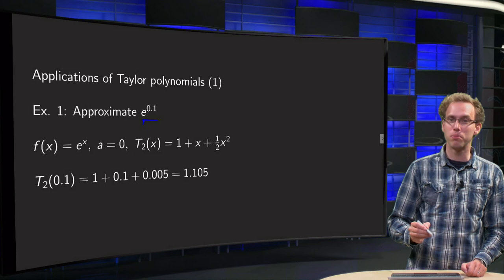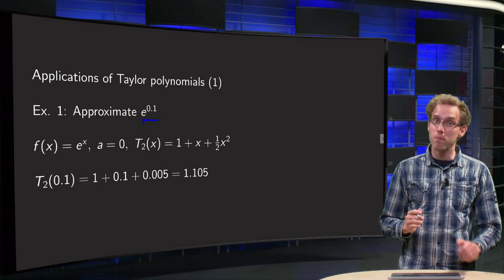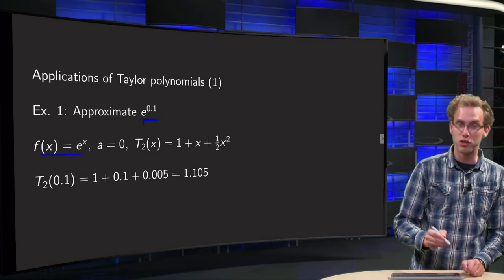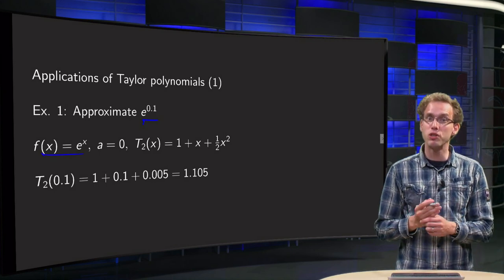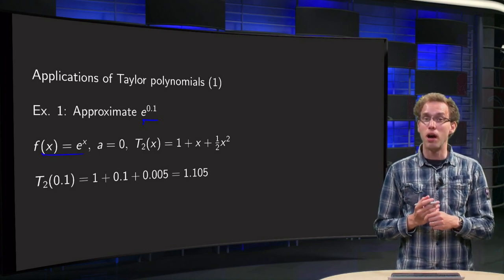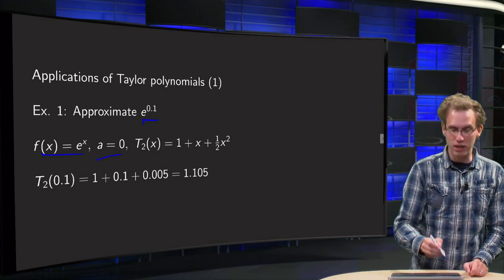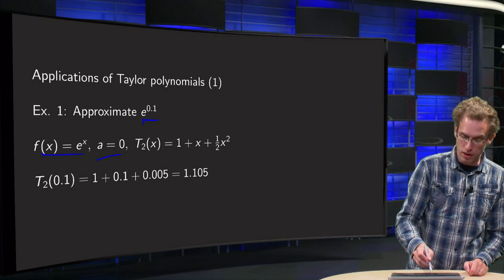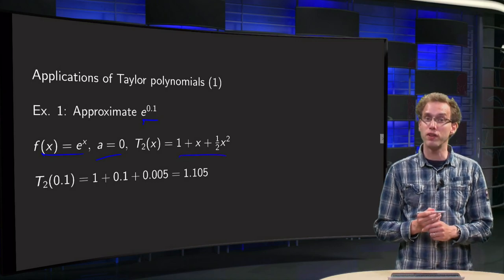So first is exponential e to the power 0.1. How does your calculator do that? Well, you have f(x) equals e to the power x, you are very close to 0, so you compute Taylor polynomial around a equals 0. And let us do just T2, so that's 1 plus x plus 1 half x squared.